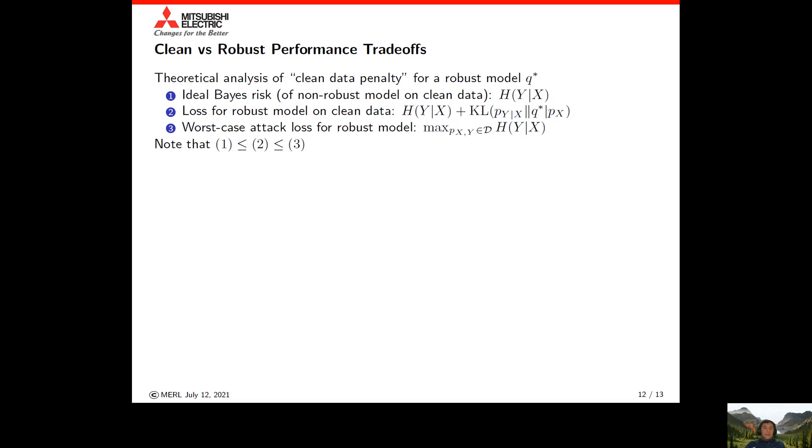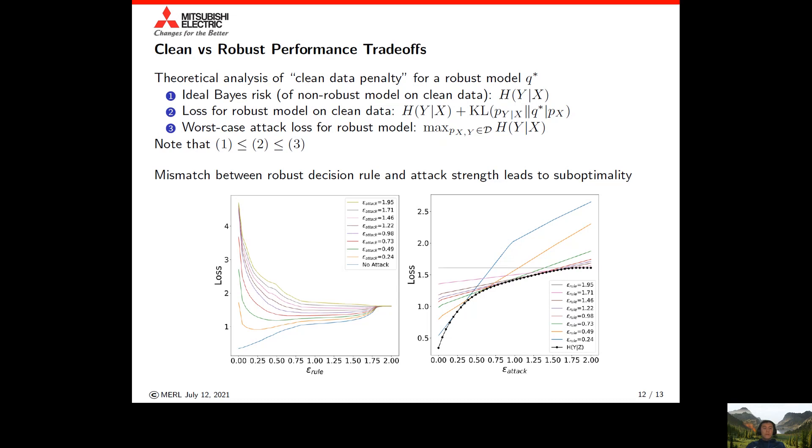Thus, this notion of a clean data penalty for robust models can be seen as a mismatch between the robust decision rule and the statistics of the data distribution. We explore the effects of this mismatch in the plots below.